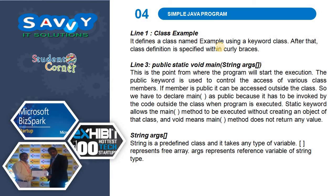Now in detail: 'class example' defines a class named 'example' using the keyword class. The class definition is specified within curly braces. Line 3 — public static void main(String[] args) — is the point from where the program starts execution. The public keyword controls access to class members; if a member is public it can be accessed outside the class. Main must be public because it is invoked by code outside the class. The static keyword allows the main method to execute without creating an object, and void means main does not return any value.